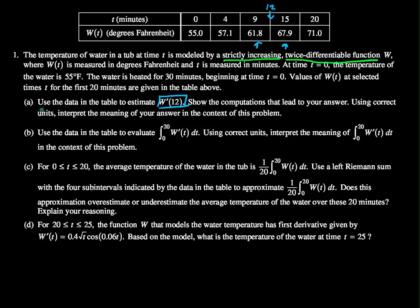Part B. Use the data in the table to evaluate the integral, the definite integral from 0 to 20 of w prime of t dt. Using correct units, interpret the meaning of this in the context of the problem. So what I see here is I have an integral of a derivative.